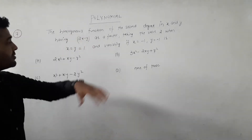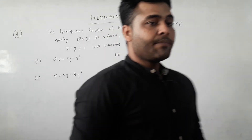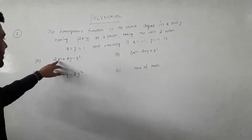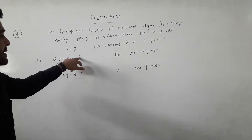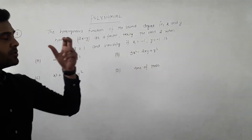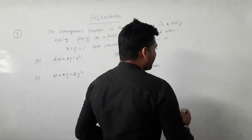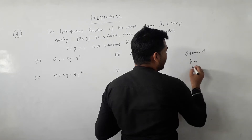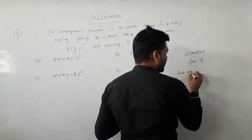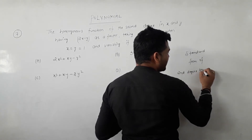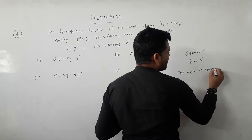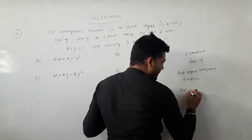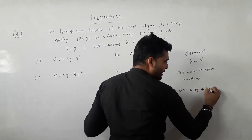Now we have a homogeneous function. The standard form of a second-degree homogeneous function is ax² plus 2hxy plus by². So we write it in the standard form and proceed.